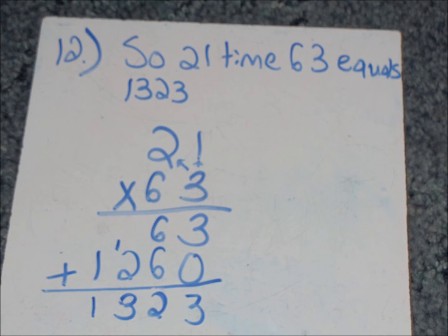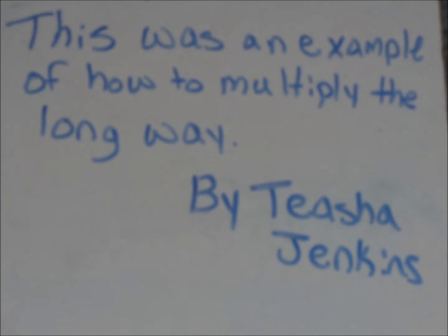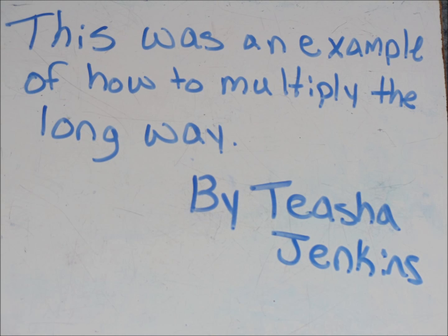So, 21 times 63 equals 1323. This was an example of how to multiply the long way by Tisha D.